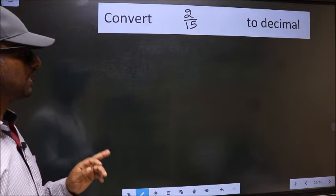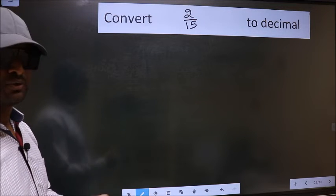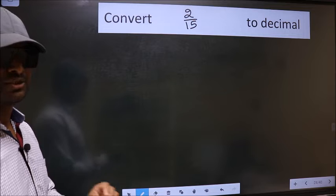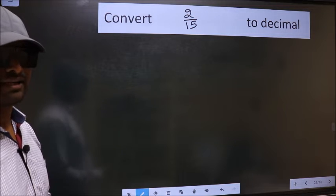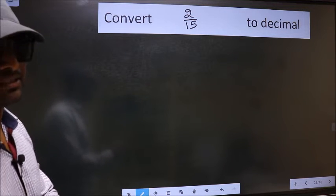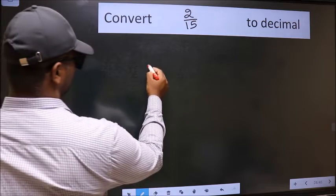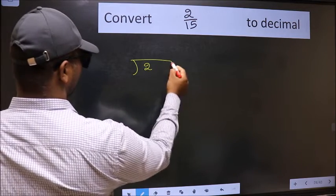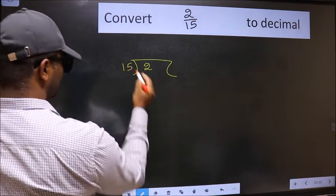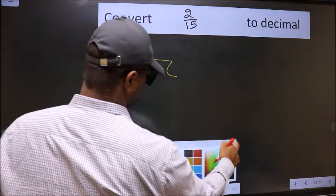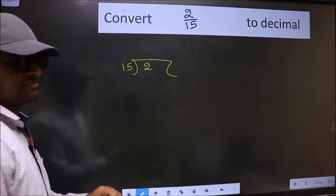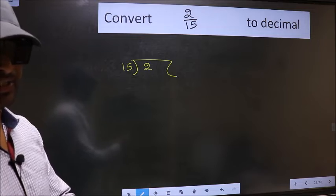Convert 2 by 15 to decimal. To convert to decimal, we should divide. And to divide, we should frame it in this way: 2 here and 15 here. This is your step 1. Next.